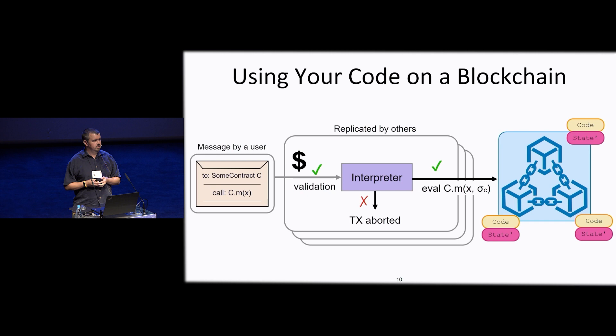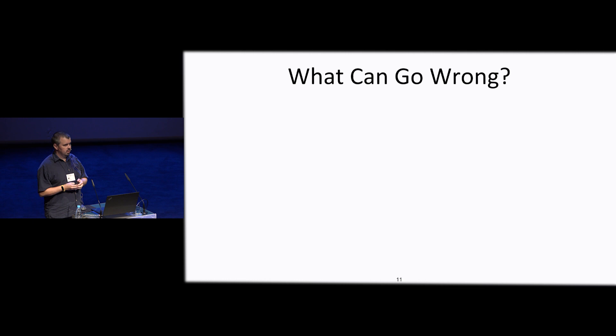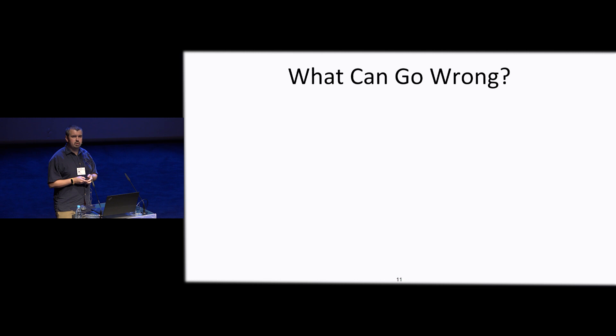You attach currency to transactions to make sure you don't waste other people's resources — that's why you pay up front. So what can possibly go wrong with this setup? Many things. But let's focus on the bugs that are not part of the smart contracts themselves, but happen to be introduced in the language layer. I'm going to give three particular scenarios of how things can go very badly, using my favorite characters from Futurama.